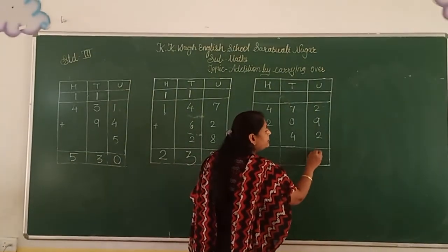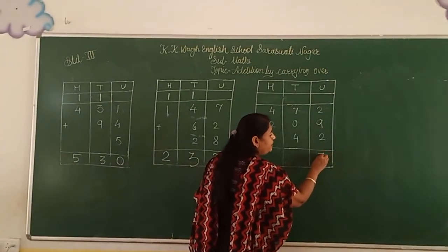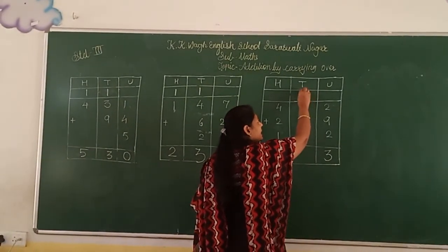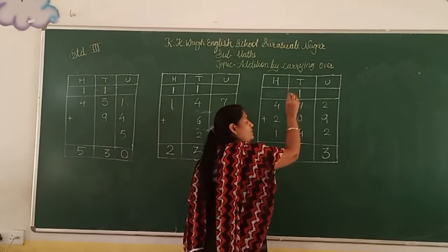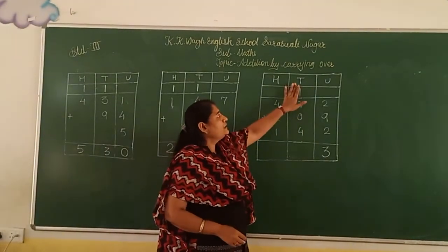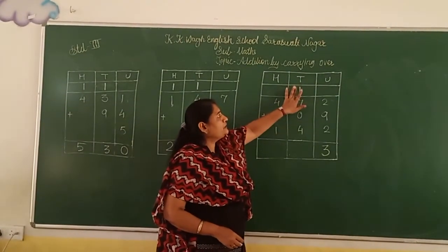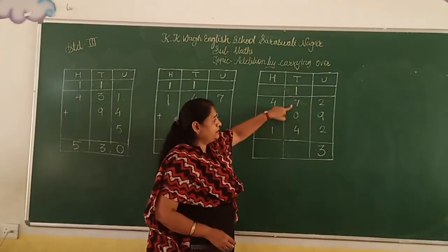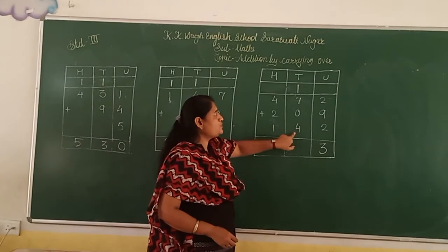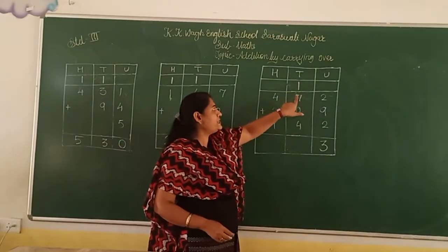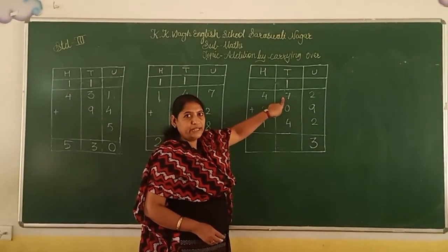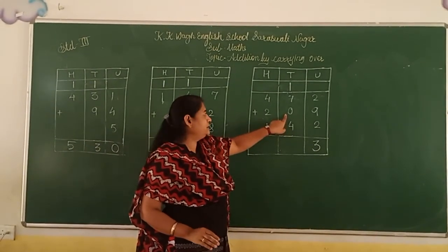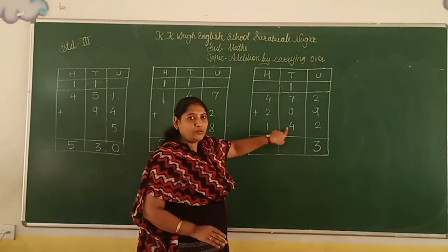It is unit size. So we keep the 3 in unit place and 1 we keep in the 10th place. In the 10th place, we see 1 plus 7 plus 0 plus 4. 1 plus 7 is 8. 8 plus 0 means 8. 8 plus 4...